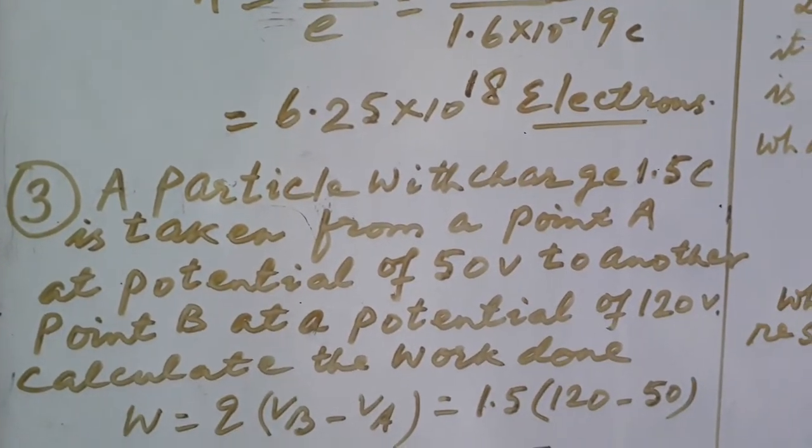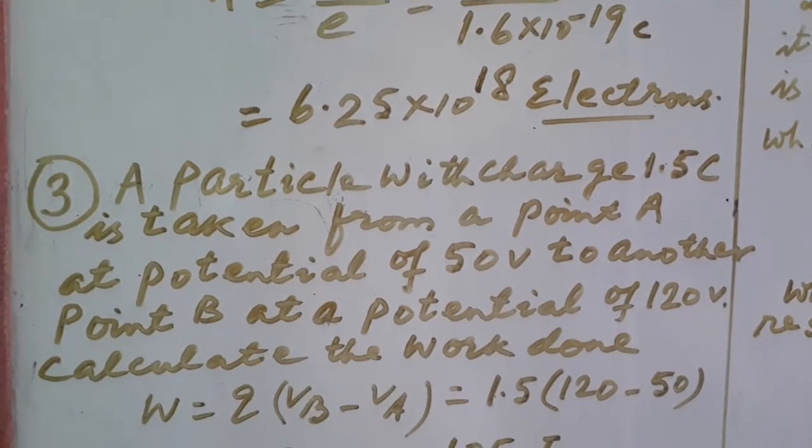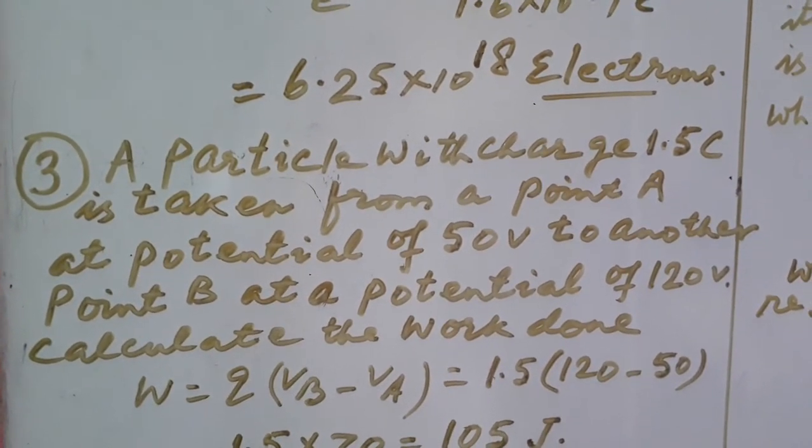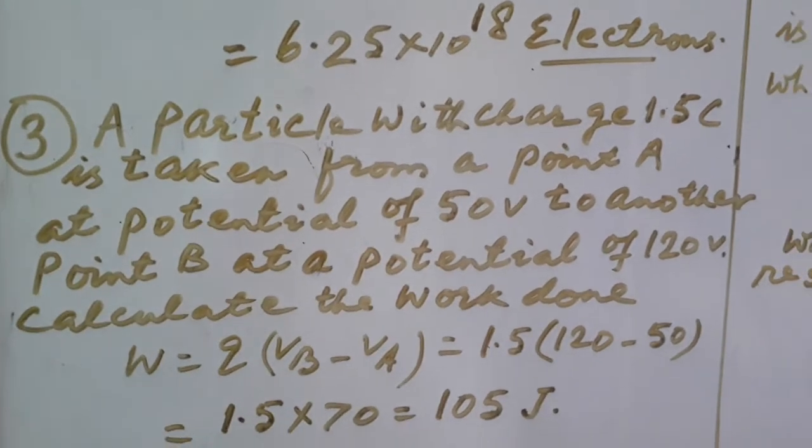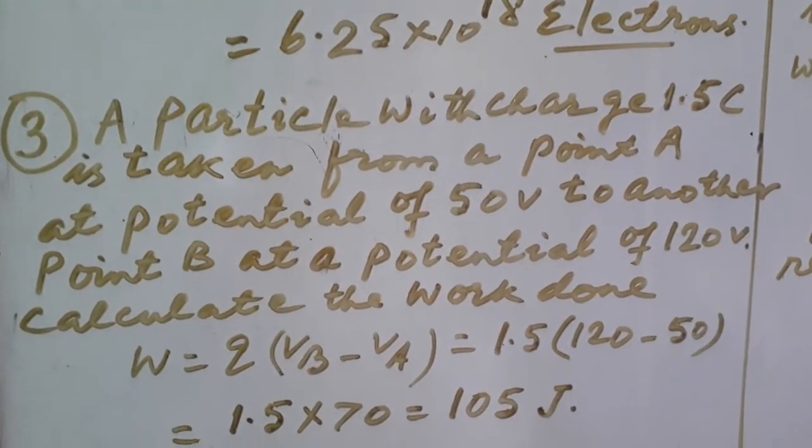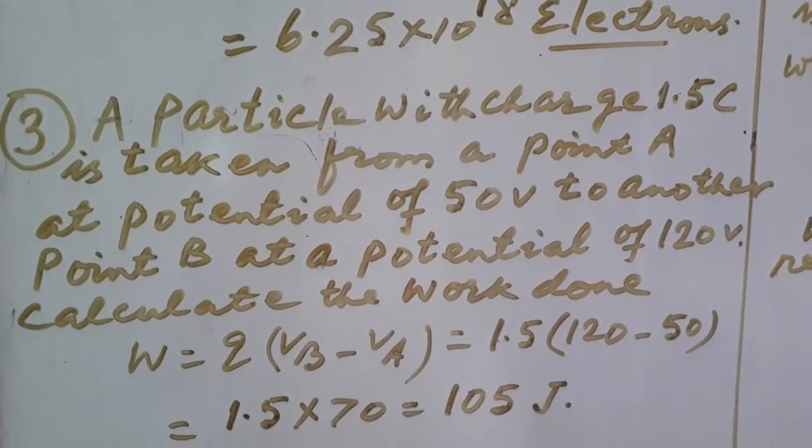Third question: a particle with charge 1.5 coulomb is taken from a point A at potential of 50 volt to another point B at a potential of 120 volt. Calculate the work done.